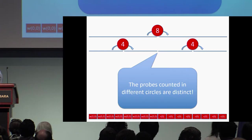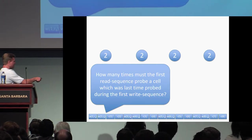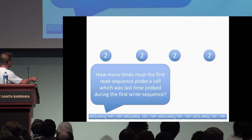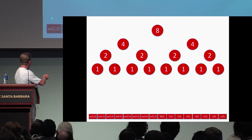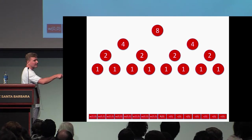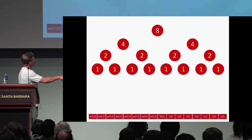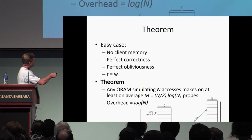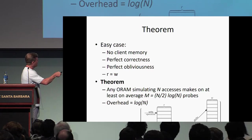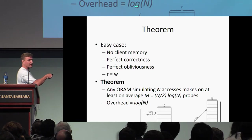Let's complete the proof. Write two random words and read them back, write two, read them back, and so on. Each read phase requires at least two probes back. We offload via obliviousness onto the dummy sequence. Do this all the way down to write-one, read-one pairs. All these probes are distinct. In each row there are n/2 distinct probes, and there are log n rows. So if we make n accesses, m (the number of probes) must be at least n/2 · log n, giving an overhead of log n.